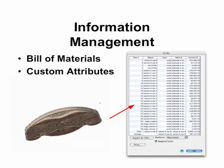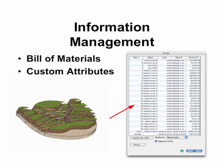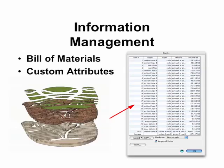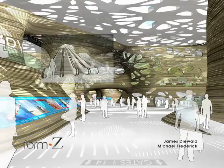Form Z also includes an information management system which allows you to extract data from your 3D model. This is great for creating bills of materials, you can even assign custom attributes for your geometry, and you can also export that out to a standard Excel spreadsheet.